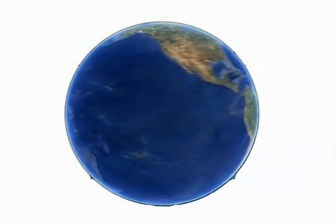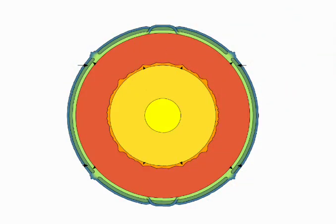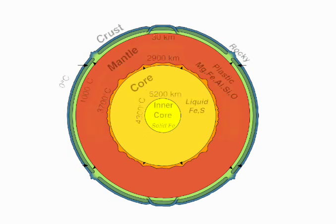As I've explained before, the earth consists of several layers. Where we live on the outer crust, which is only about 30 kilometers thick.